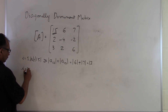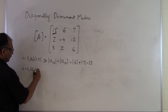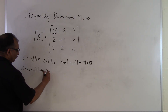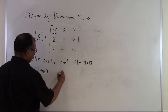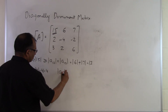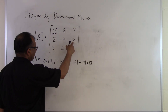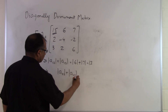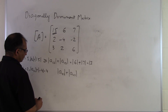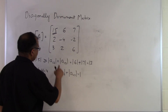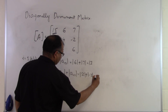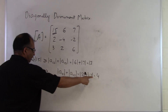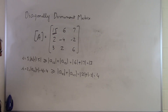For i = 2, the second row diagonal element is a_22 = -4, so its absolute value is 4. The sum of the absolute values of the remaining elements is |a_21| + |a_23| = |2| + |-2| = 4. Since 4 ≥ 4, the inequality is satisfied, though it is not strictly greater than.